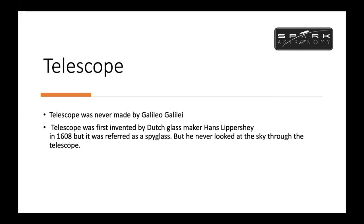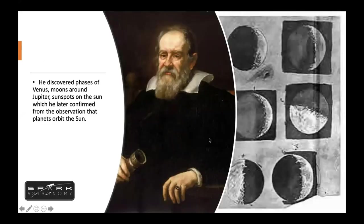It was referred to as a spyglass — spying something. Galileo never made the telescope. The common myth is that Galileo made the telescope, but the first telescope was invented by Hans Lippershey and it was an accidental discovery. He later discovered the phases of Venus, moons around Jupiter, and sunspots on the sun.